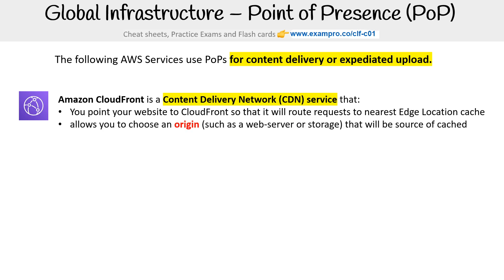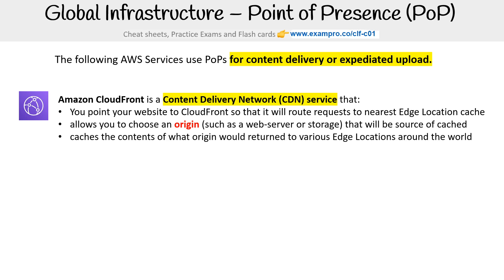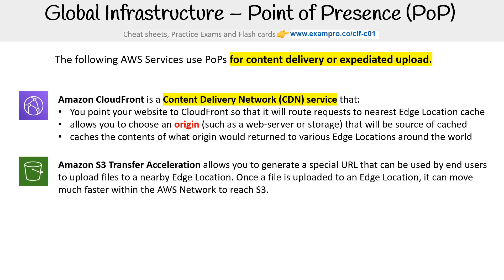It's going to allow you to choose an origin — that could be a web server or storage — which will be the source of the cache. CloudFront caches the content of what the origin would return to various edge locations around the world.